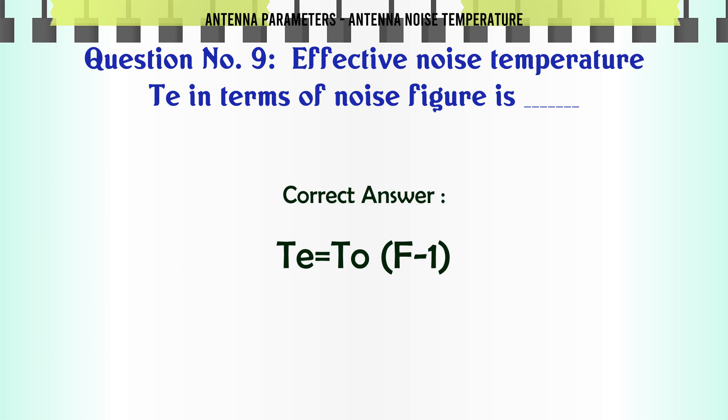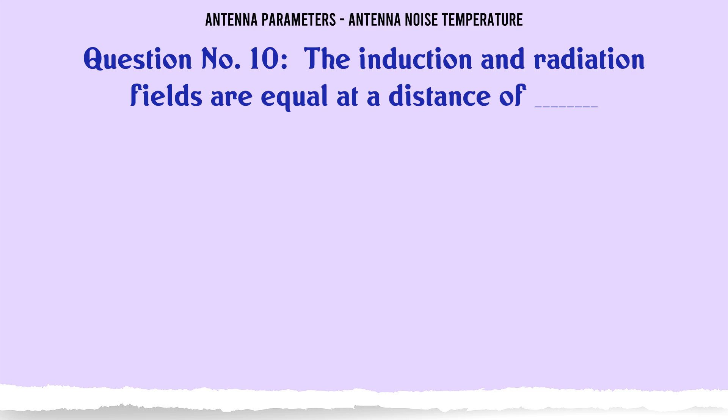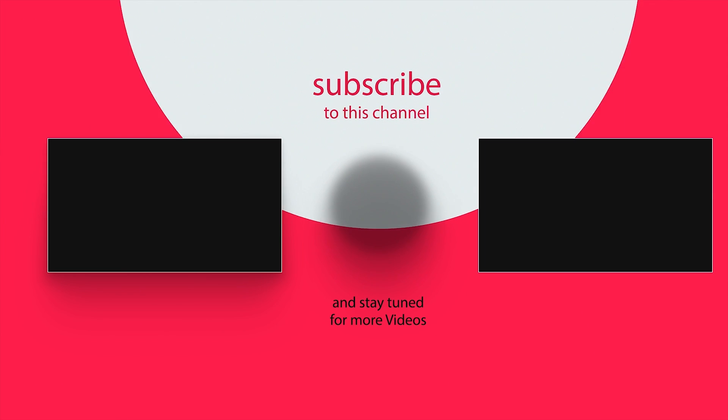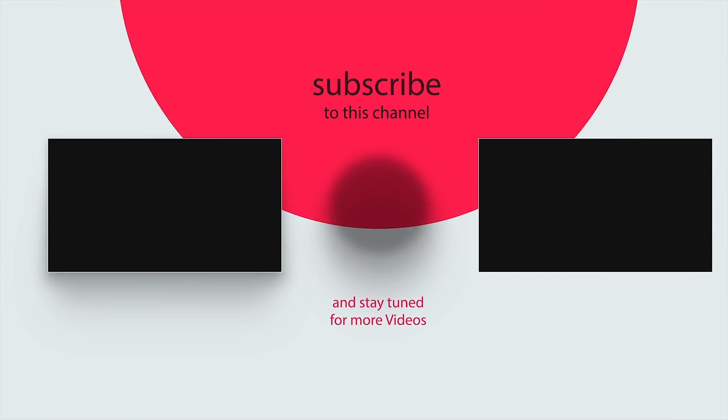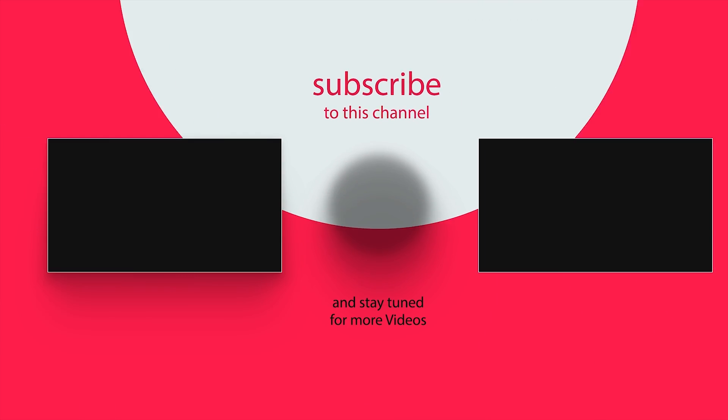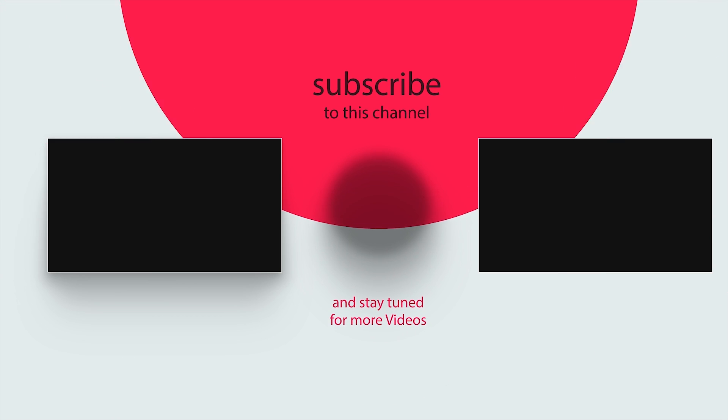Induction and radiation fields are equal at a distance of: Option A: lambda over 4 pi. Option B: lambda over 6 pi. Option C: lambda over 8 pi. Option D: lambda over 2 pi.